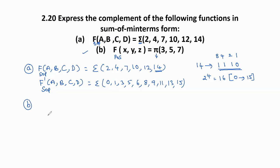Now let us take the second part: f(x,y,z) = π(3,5,7). Pi means product operation, which is in POS form. Now to find f' in POS, f'(x,y,z) equals pi of the missing maxterm numbers.